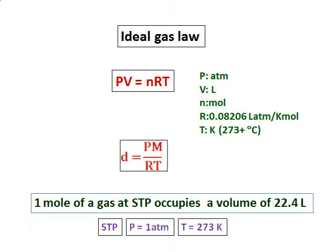Another thing you have to remember is, one mole of a gas at STP occupies a volume of 22.4 liters. The condition of STP is pressure is 1 atm and the temperature is 273 kelvin.